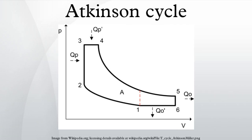The Atkinson cycle engine is a type of internal combustion engine invented by James Atkinson in 1882. The Atkinson cycle is designed to provide efficiency at the expense of power density and is used in some modern hybrid electric applications.